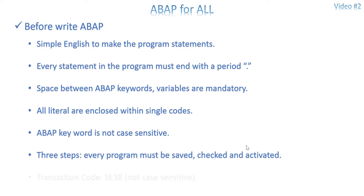Transaction code — as I mentioned in the last video, if you open any window inside SAP you need a transaction code to open it. The first transaction we are going to see is SE38. It is not case sensitive. SE38 is the transaction code to open the ABAP editor. Every window has its own name — ABAP editor, sales order creation, purchase order creation, table creation, screen design, form painter. SE38 opens the ABAP editor, which is the window to write a program in SAP.